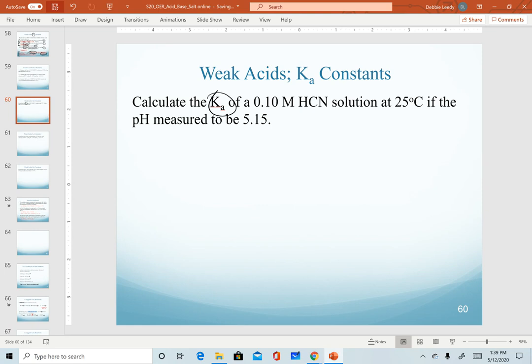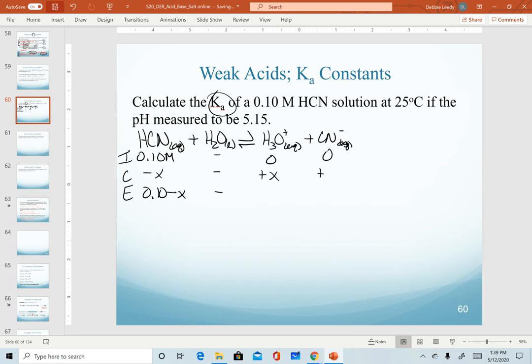Again, we want to calculate Ka of HCN. If we're asked to find a Ka value, that's also a hint that this is a weak acid, meaning this is going to set up equilibrium and we set up our ICE table. We only know our initial concentration of the acid.